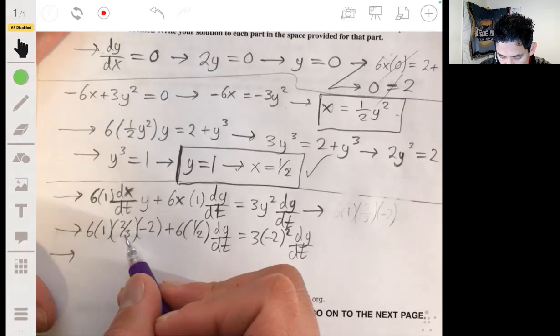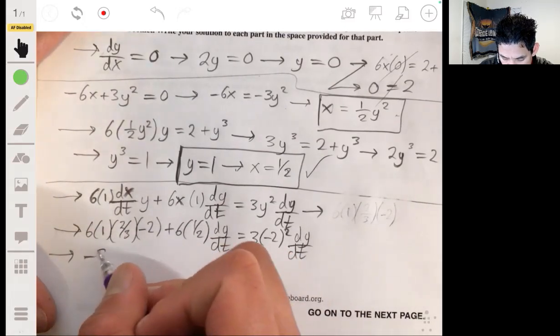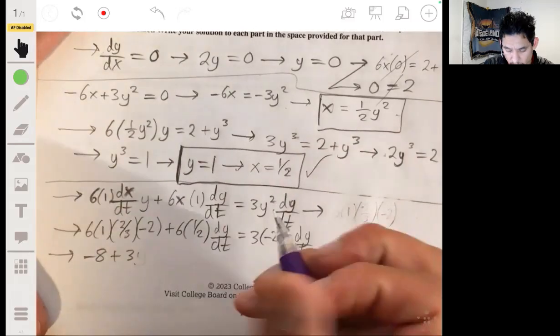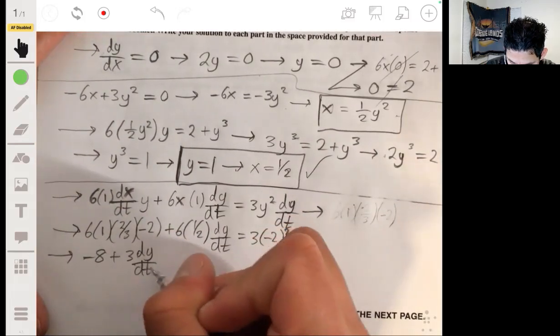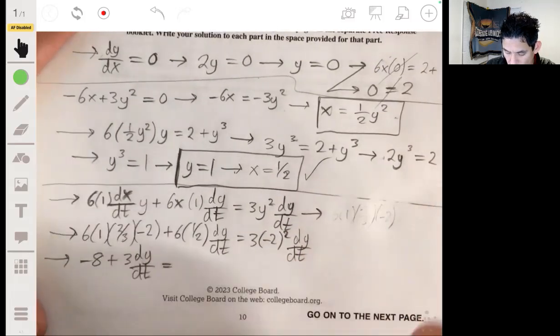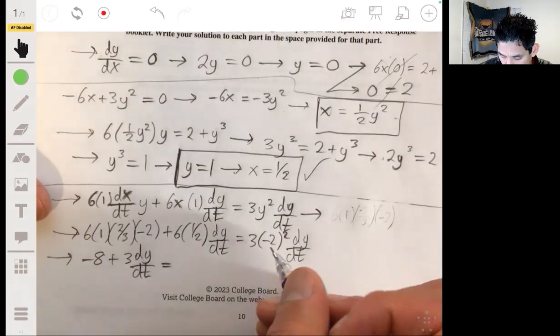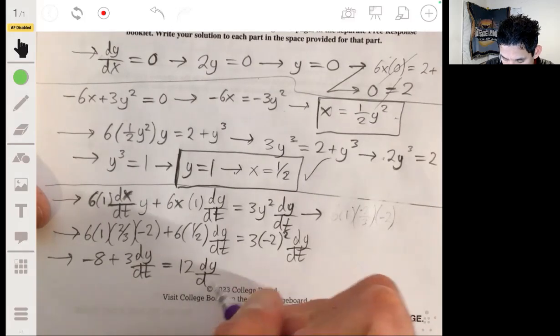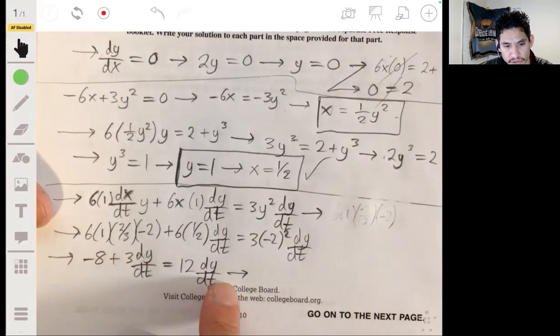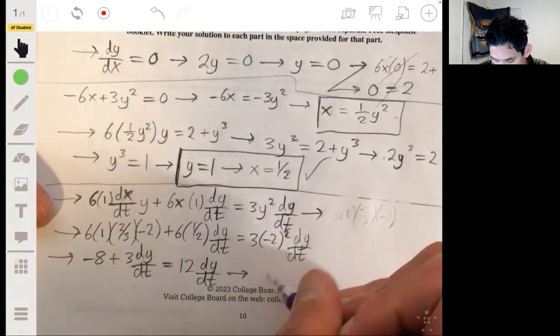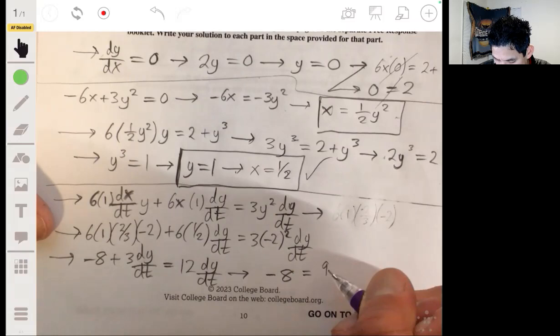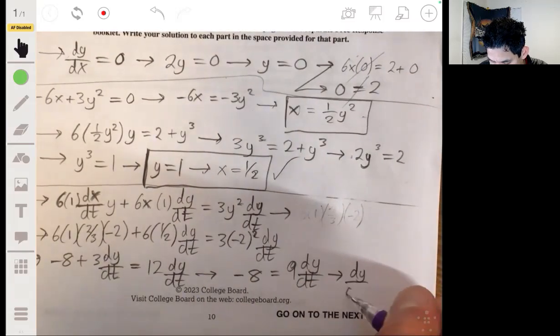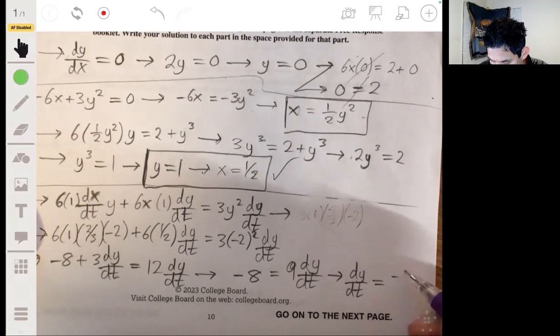Six, two, twelve over three, four times negative two, negative eight, plus three dy/dt. And then negative four, so negative four times three equals 12 dy/dt. Now let's just solve for this dy/dt. Let's take away the three dy/dt on the left, and we get negative eight equals nine dy/dt. And dividing both sides by nine, we get dy/dt will be negative eight-ninths.